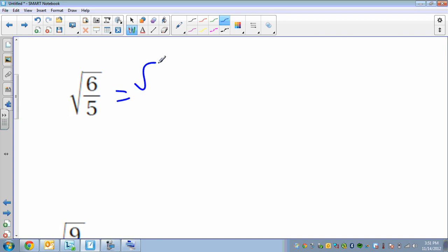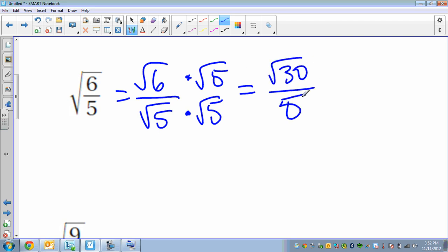Here's our next one. So we break that up, we can go like this, break it up, just use that quotient rule. And then we want to multiply by the same thing that's on the bottom. When we do that, we get the square root of 30 over 5, and that's our answer.